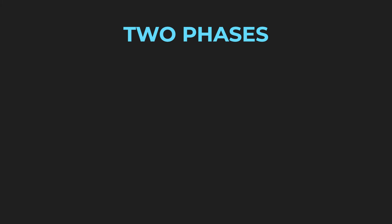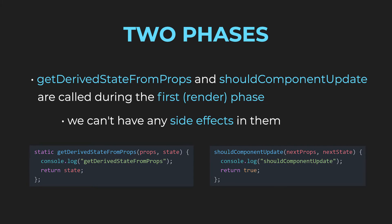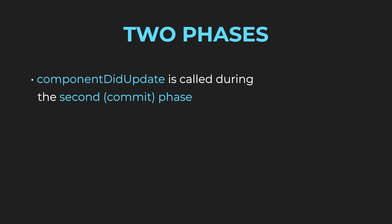Now is a good time to return to the two phases. GetDerivedStateFromProps and ShouldComponentUpdate are called during the first phase, therefore we can't have any side effects in them. GetDerivedStateFromProps is static so it's out of the question right away, and ShouldComponentUpdate is also out of the question — why would you have any side effects in a function like this? So that's the render phase. Now comes the commit phase with ComponentDidUpdate and all of the side effects.